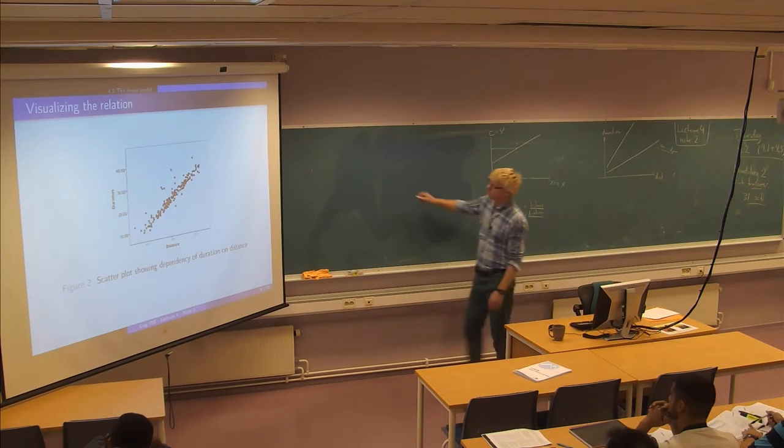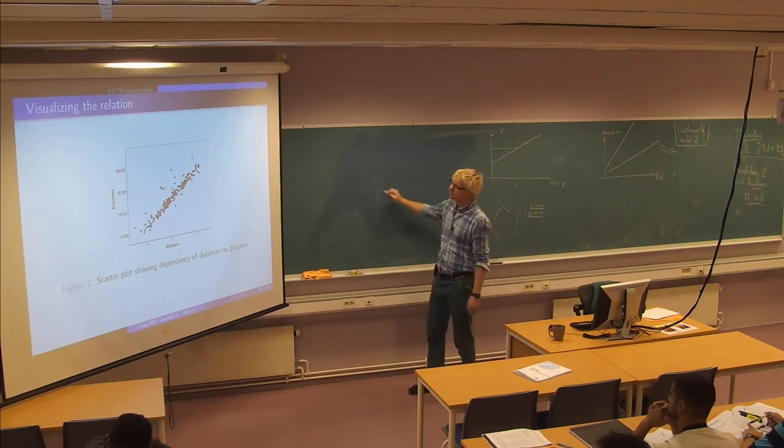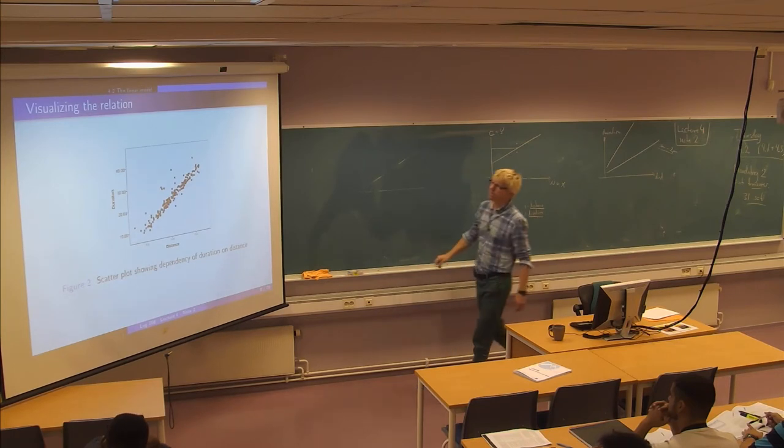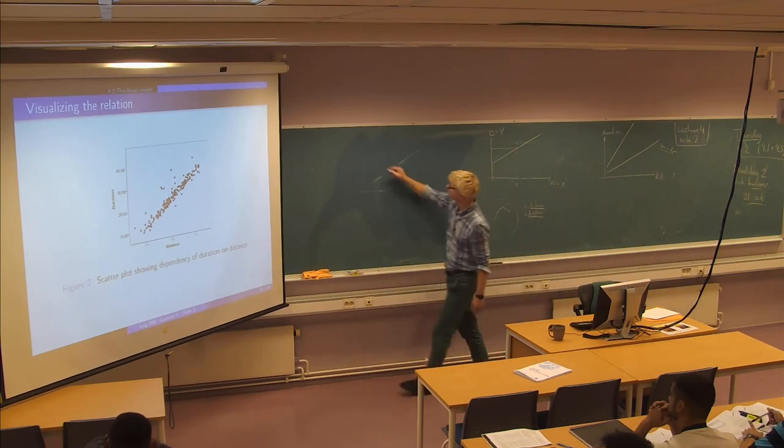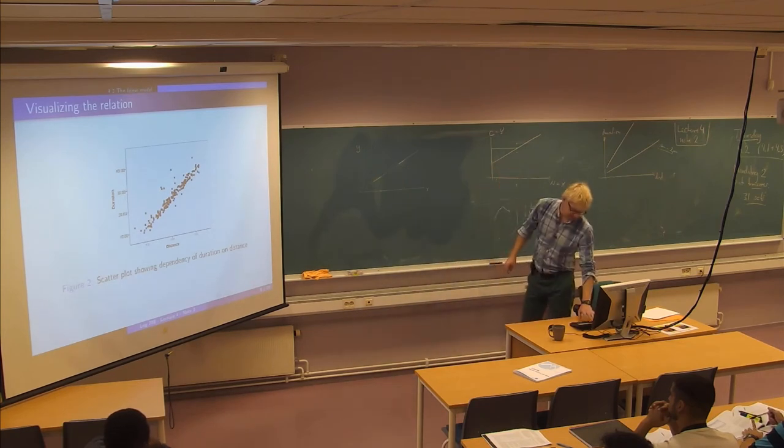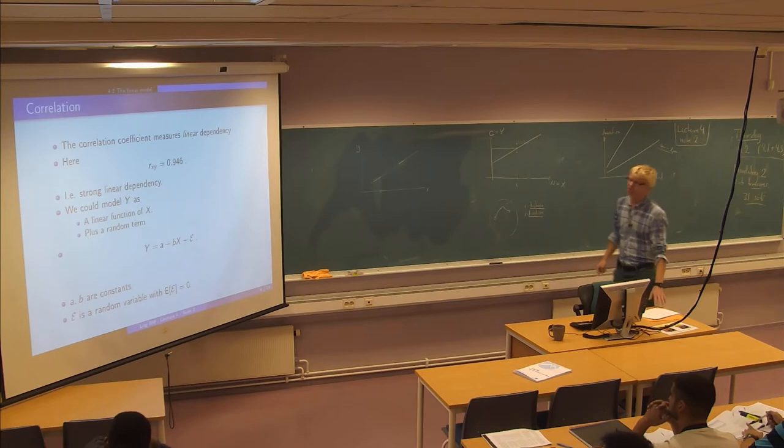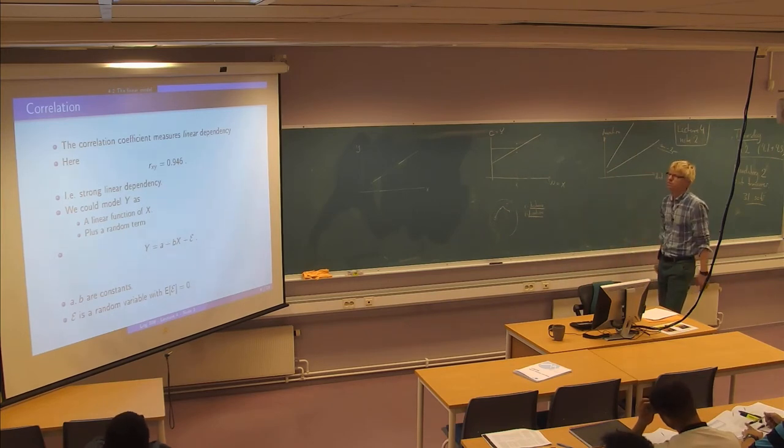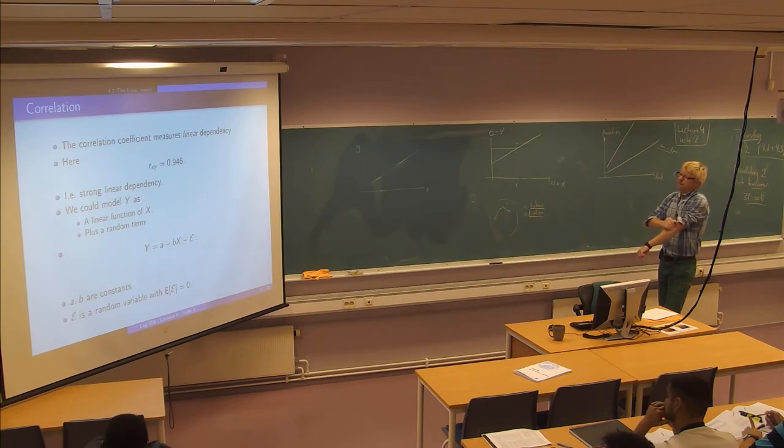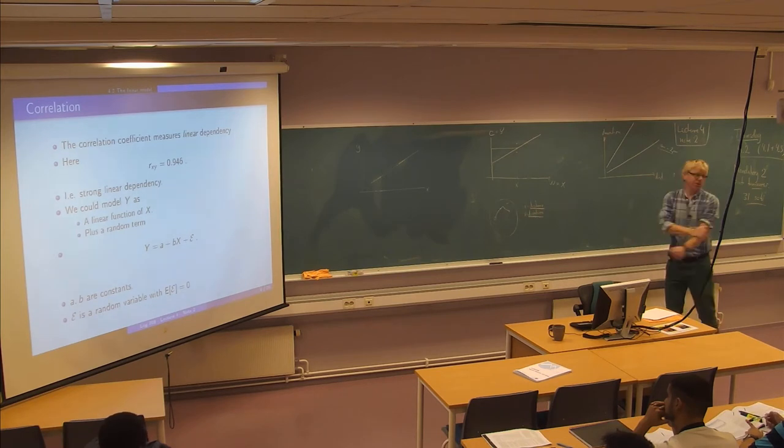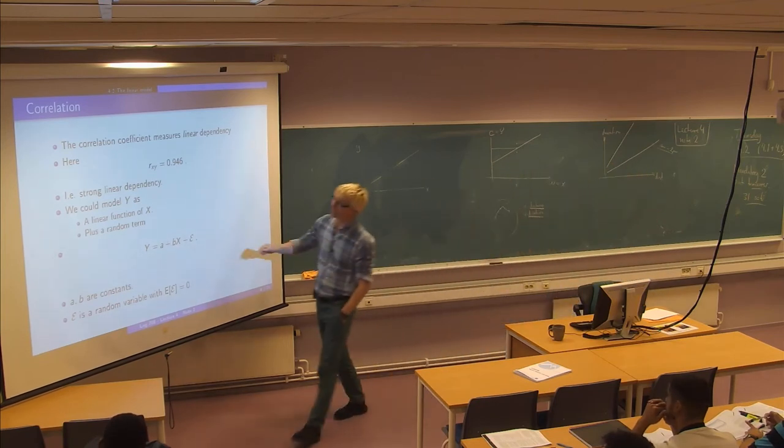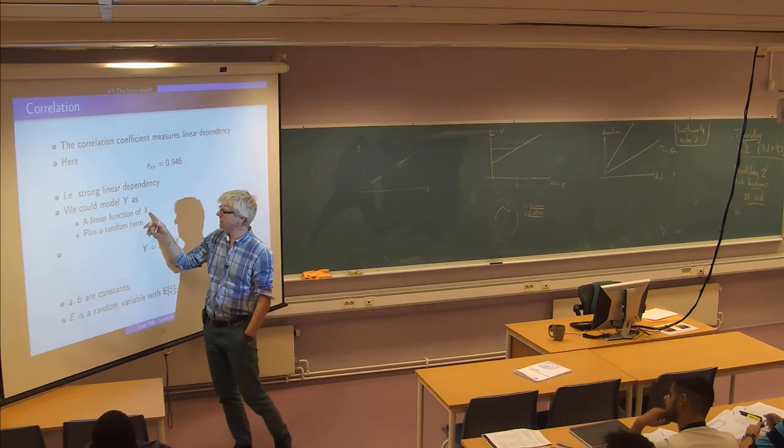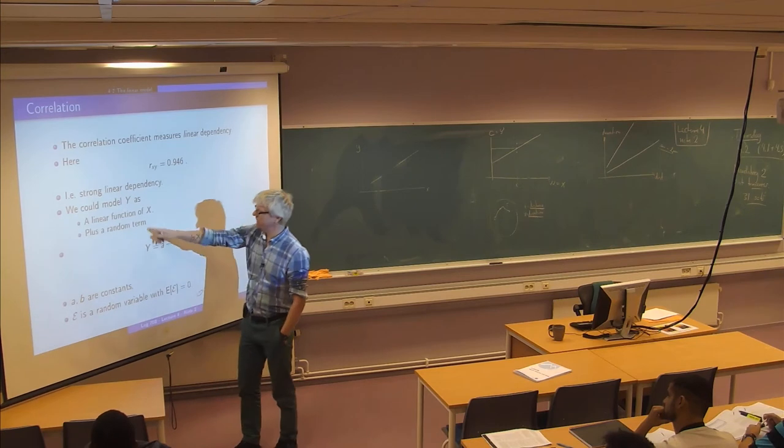If you look at the picture here, it really looks like quite close to something linear in the bottom there and then there is some random deviation on top of that. So it makes a lot of sense to talk about the correlation here which is about 0.95 which means a strong linear dependency. And the model we would probably choose for this one is the functional relation is a linear function of x. So we model the duration as a linear function of distance and then something to take care of the randomness here.